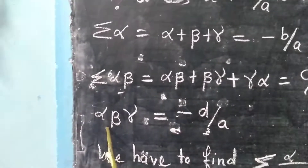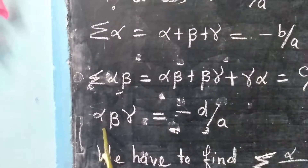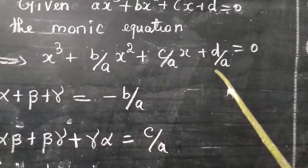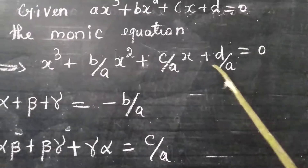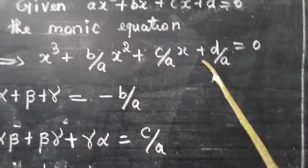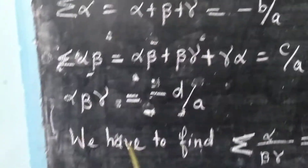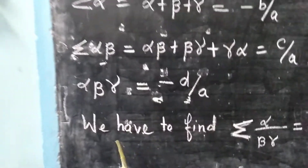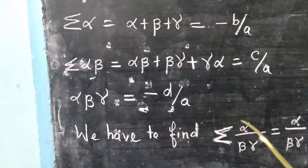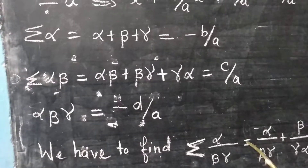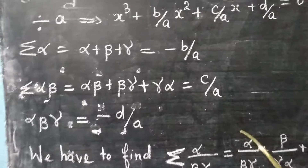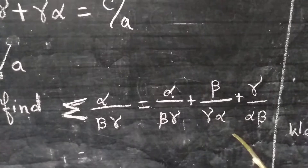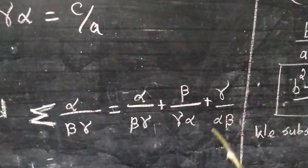Next we are trying to find the product of the roots: alpha into beta into gamma is equal to minus D by A. This comes from the constant term D by A — since it is positive, we take the opposite sign minus. So the product of the roots is minus D by A. Now in the question they are asking us to find sigma alpha by beta gamma.